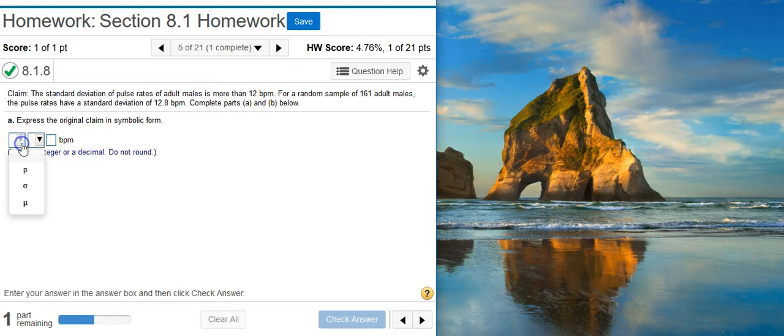So this first drop-down, we want to select the population parameter that matches standard deviation. It's not going to be P, because P is the representation for population proportion. It's not going to be mu, because mu is the representation for population mean. What we want is sigma. Sigma is the population standard deviation. So this is what we'll select.